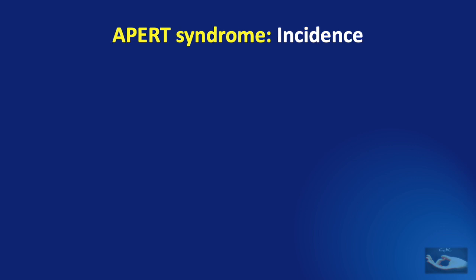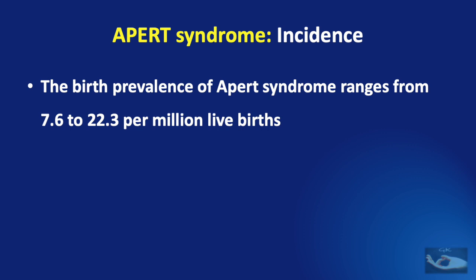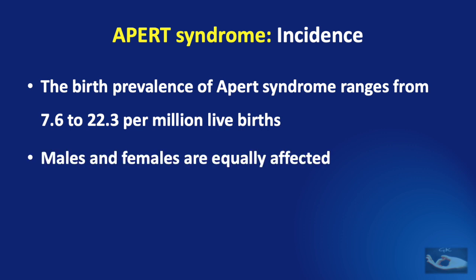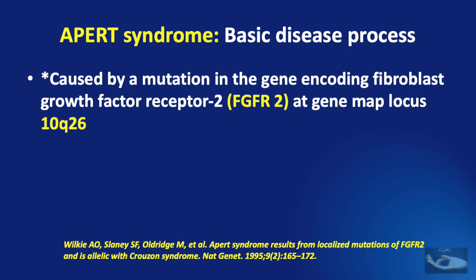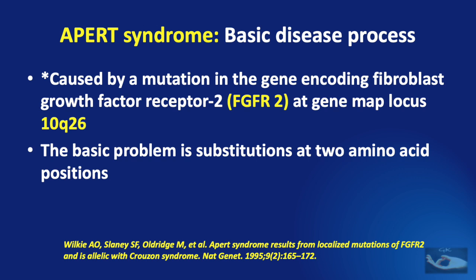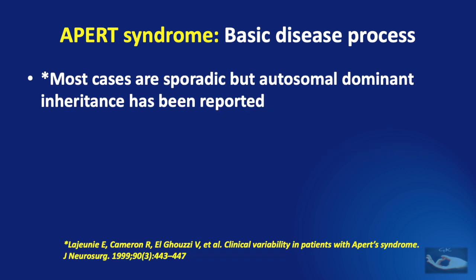As far as the incidence of this condition is concerned, the birth prevalence of Apert syndrome ranges from 7.6 to 22.3 per million live births, and males and females are equally affected. Apert syndrome has been found to be caused by a mutation in the gene encoding fibroblast growth factor receptor 2 (FGFR2), at the gene map locus of 10q26. Most cases are sporadic, but autosomal dominant inheritance has also been reported.